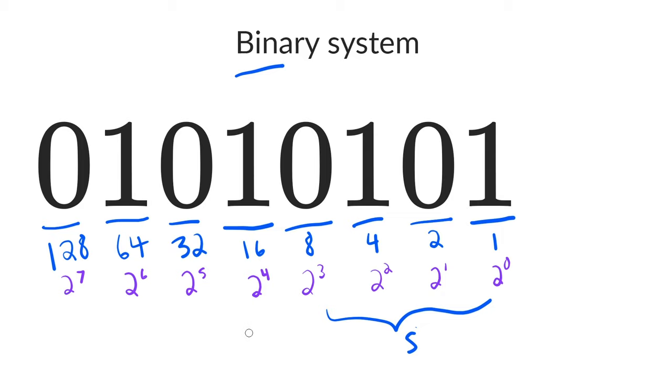So we have a 1 in the 16, so that means we're going to add 16 to the number. Then there's a 0 in the 32, so that's just going to be 0. There's a 1 in the 64, so that's going to be 64. And there's a 0 in the 128, so that'll be 0. So now we've got 64 plus 16 plus 5. So that's 80 plus 5, which is 85 in decimal.